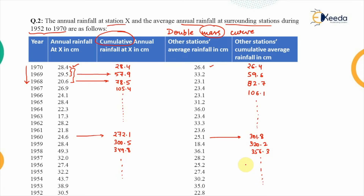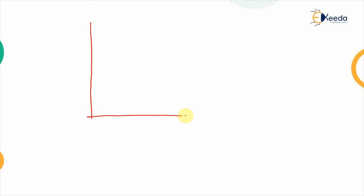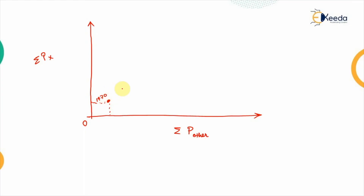When we plot the double mass curve, the x-axis represents the cumulative data for the other stations and the y-axis represents the problematic station X. Starting from zero, for the first year 1970 the point corresponds to values 28.4 and 26.4. We continue plotting in this way, and up to year 1960 the line follows a consistent straight path.